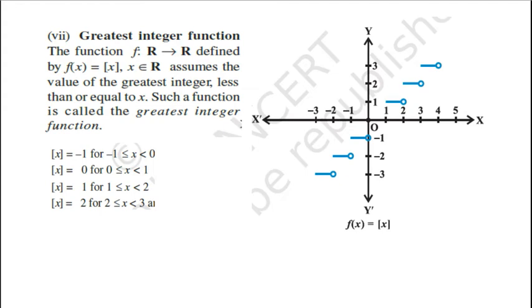Aur agar ye khud hi x integer hai, toh is ki value wohi hogi. Iska kahene ka matlab yeh hua ki agar 1, 2, 3, ya minus 1, minus 2, minus 3, ya zero hai, tab is ki value wohi rahegi. 0 pe 0, 1 pe 1, 2 pe 2, minus 1 pe minus 1.